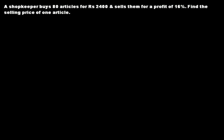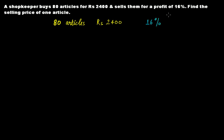This is part two of the video series on problems on profit percentage and loss percentage. The problem says: a shopkeeper buys 80 articles for rupees 2400 and sells them for a profit of 16 percent. Find the selling price of one article. Note that we need the selling price of one article, not of all 80 articles — this is important.